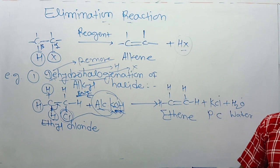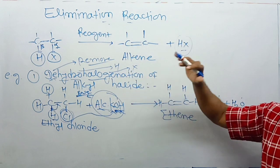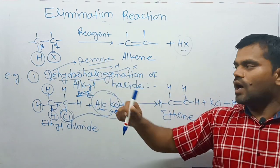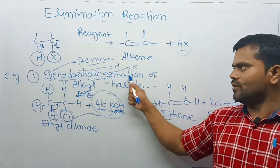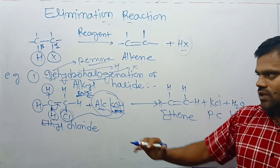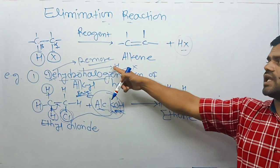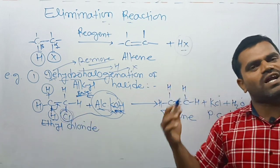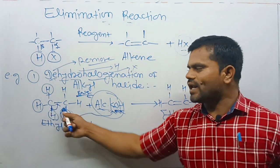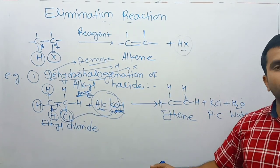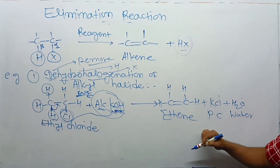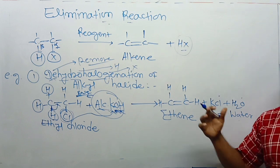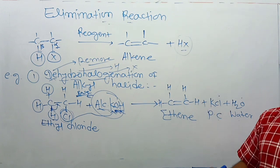This reaction is called the elimination reaction, and this specific example is dehydrohalogenation of alkyl halide. 'De' means remove, 'hydro' means hydrogen, 'halogen' means halogen — so hydrogen and halogen are removed. The products are alkene, potassium chloride, and water.